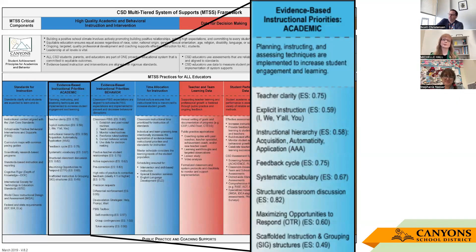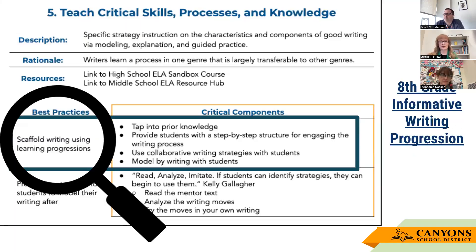This fits into our MTSS framework with evidence-based instructional priorities, and it hits every single one of them. It's guided instruction with students where feedback is happening. We're following the instructional hierarchy, systematic vocabulary, classroom discussion — this has it all. According to the secondary writing framework, we're sitting in the fifth pillar, which is to teach critical skills, processes, and knowledge. This is about process writing coupled with gradual release to build student efficacy around writing.